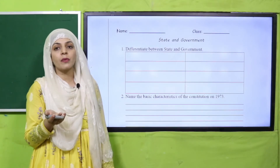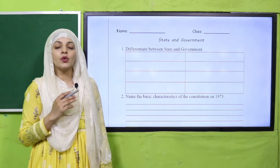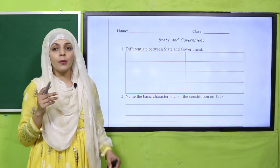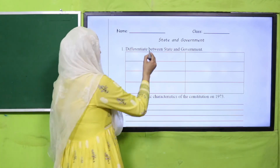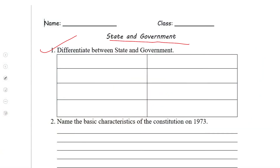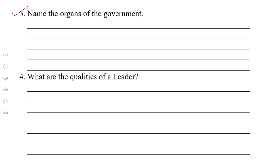For evaluation, you can download the worksheet from the description box below this video, or get it in print form from your teacher. Write down your name and your class. The first question asks you to differentiate between state and government. The second question asks you to name the basic characteristics of the Constitution of 1973 — only name them, do not explain.